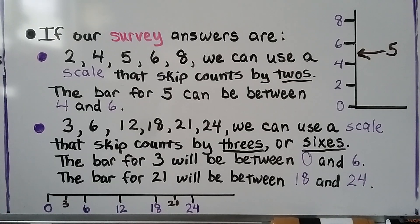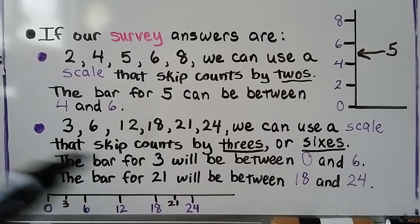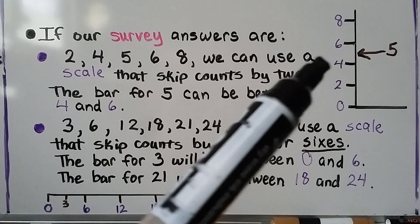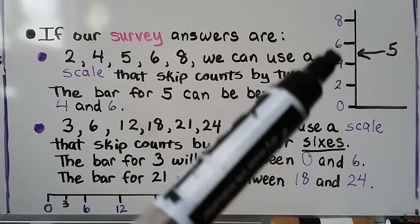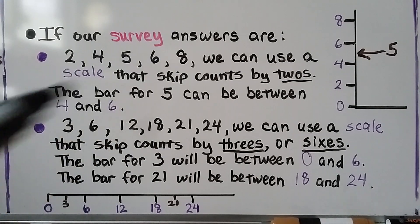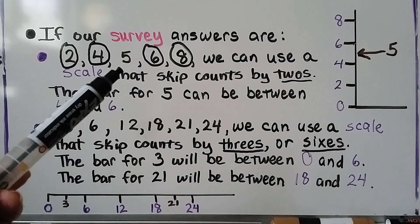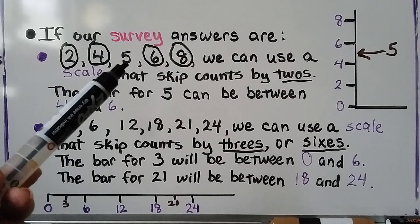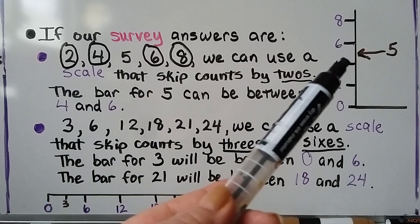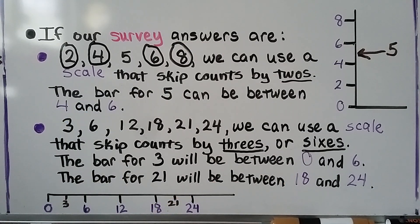If our survey answers are 2, 4, 5, 6, and 8, we can use a scale that skip counts by twos. The bar for five would fall in between four and six, but all the other numbers are multiples of two. Five is the only one that doesn't skip count by twos, and we can use a bar that goes in between for that one, so a scale counting by twos would make sense.